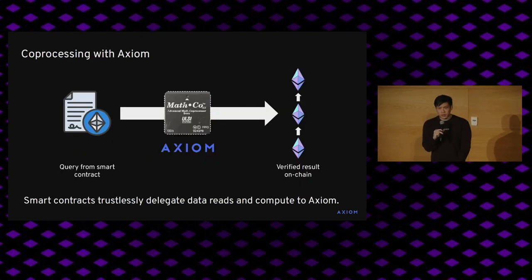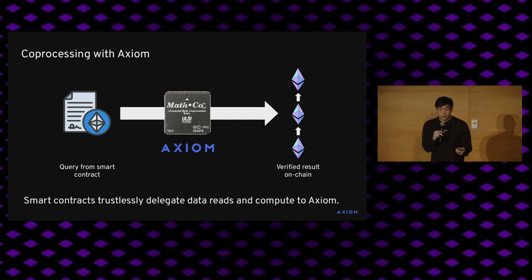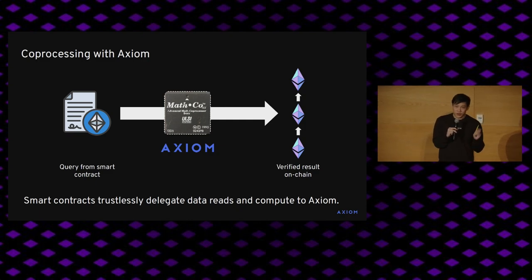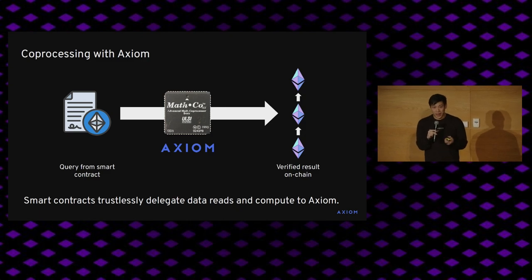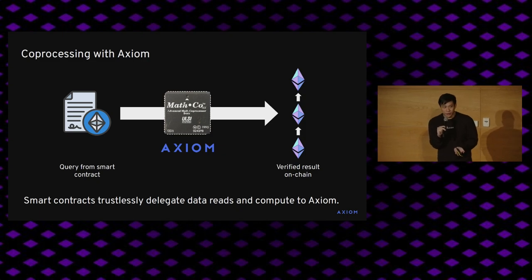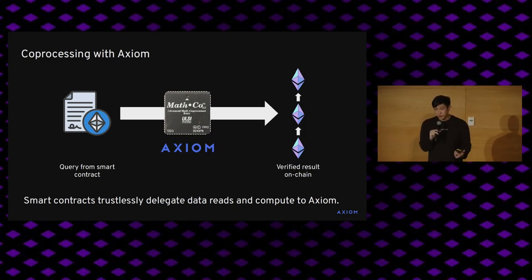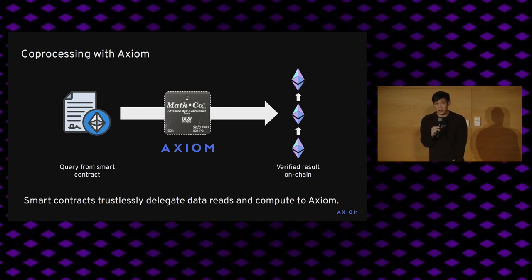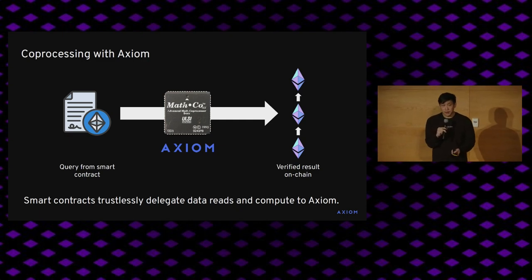The end result is a different smart contract computing paradigm. You have a smart contract, you send a query to a coprocessor — this is actually a picture of a math coprocessor from the 1990s, made by Math Co, kind of a throwback. In our coprocessor, we'll do the reads and the compute, and finally we put the verified result on-chain for the smart contract to use. We think this is a new delegated data read and compute paradigm for smart contract applications.